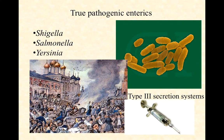In our last video, we introduced the enterobacteria and looked at the coliforms and non-coliforms. The third group of enterobacteria we want to talk about are the true pathogens. These are organisms we don't have any good relationships with. They aren't opportunistic pathogens, so if they are in us, particularly in our gut, they are very likely causing disease. Sometimes these are called professional pathogens. The three most important genera are Shigella, Salmonella, and Yersinia.